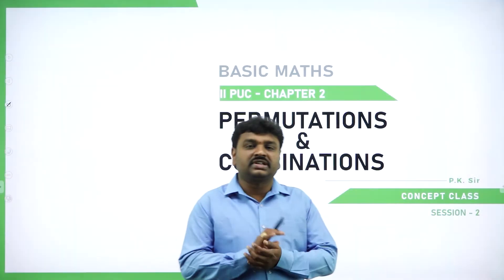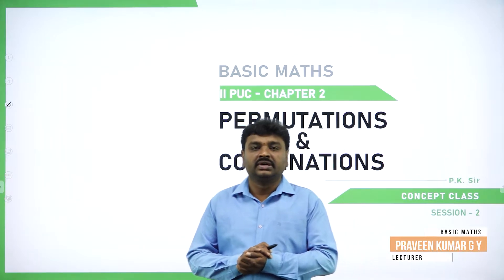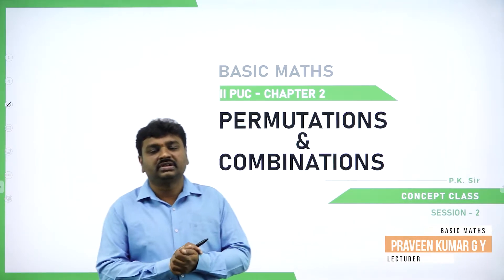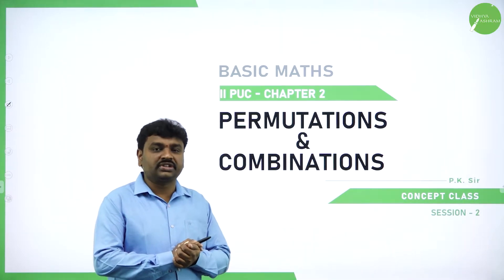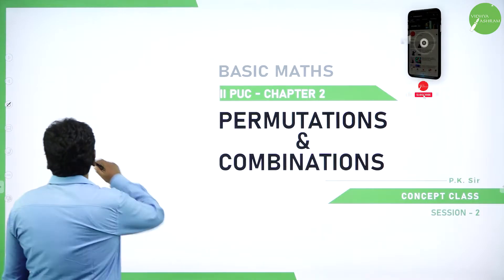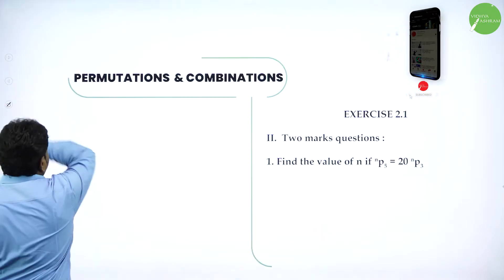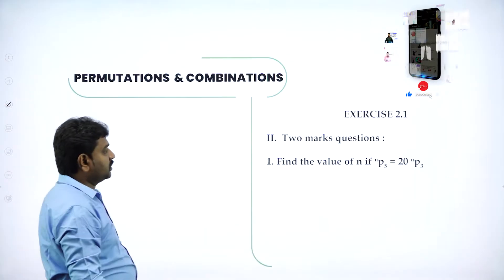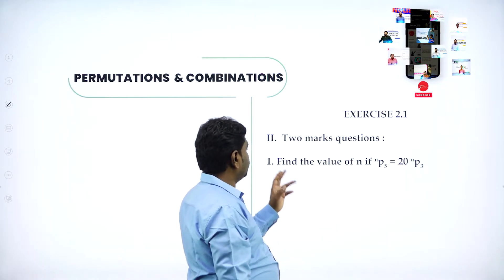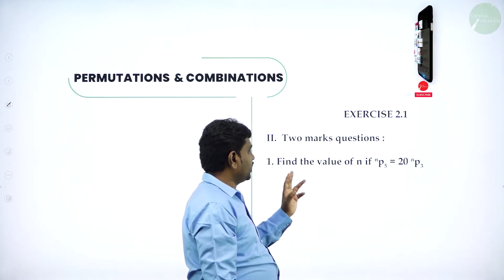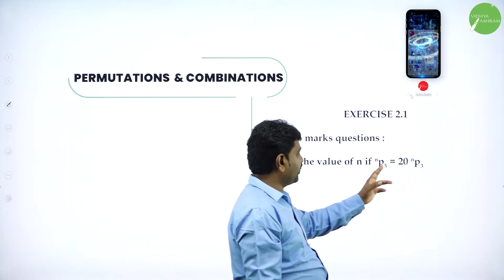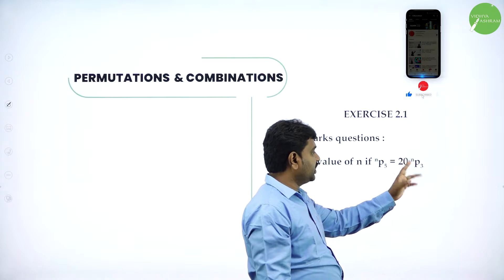Welcome to the session, dear students. Today we will go ahead with Permutation and Combination, Session Two. Exercise 2.1, problem two markers: Find the value of N if NP5 equals 20 NP3.